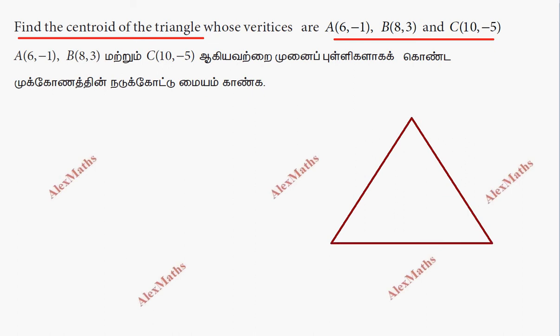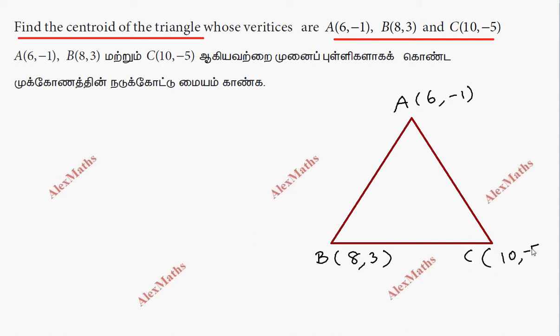The vertices are A, B, and C. Point A is (6, -1). Point B is (8, 3). And Point C is (10, -5).